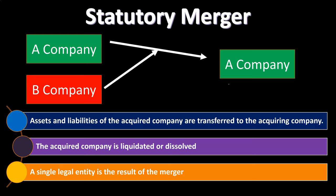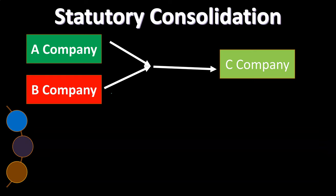From an accounting perspective, you have two entities that you're going to combine together. You deal with the rules regarding this process, which could involve re-evaluating rather than just putting book values into the prior company. Company B is cleared out and liquidated, the assets roll over to company A, the shell is dissolved, leaving you with just company A.